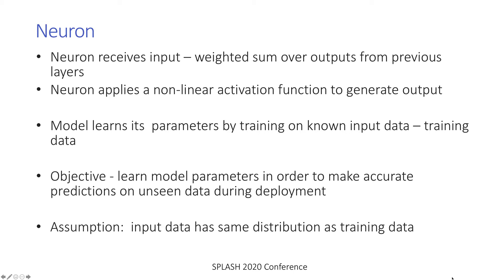A neuron receives input as a weighted sum of outputs of neurons from the previous layer, then applies a nonlinear activation function to generate its output, which is sent to neurons in the next layer. The model learns its parameters by training on known input data, called the training data. The objective of DNN training is to learn the model parameters in order to make accurate predictions on unseen data during deployment. The key assumption is that the input data will have the same distribution — the same characteristics — as the training data.